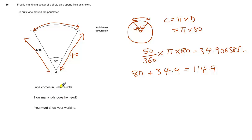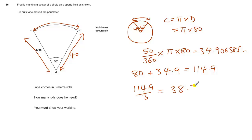Now we want to know how many 3 metre rolls are required. To work out how many 3 metre rolls we need, we divide 114.9 by 3. That gives us about 38.3 rolls of tape. Obviously we can't buy 0.3 of a roll of tape, so we'll have to buy 39 rolls of tape.